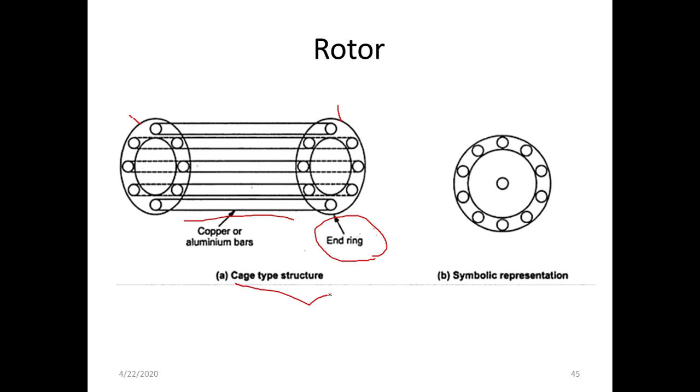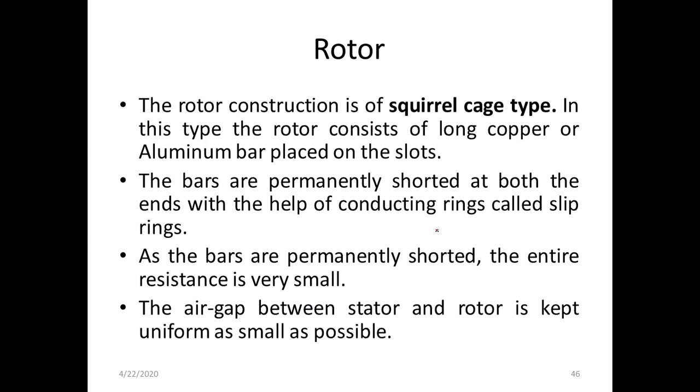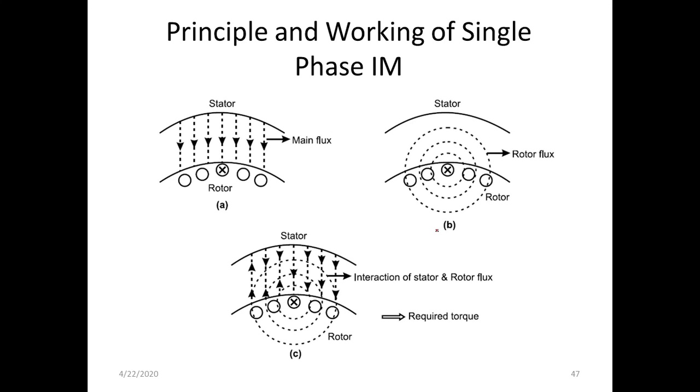The air gap between the stator and rotor is kept uniform and as small as possible. This is a cage type construction and there is a symbolic representation front view. These are the points we need to list out in the theoretical portion for the rotor. Construction is completed.